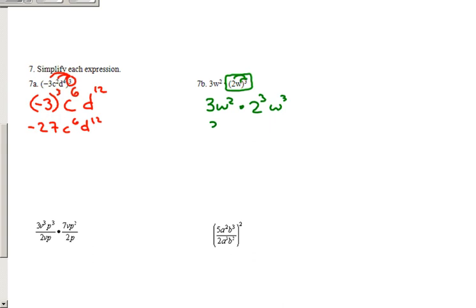Now, this gives me 3w squared times 8w to the third. 3 times 8 gives me 24. w to the second times w to the third gives me w to the fifth. And there's your final answer.